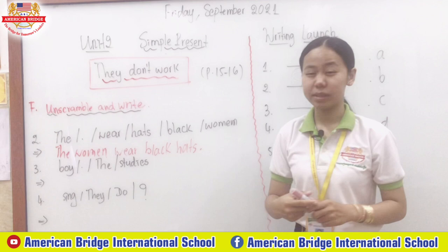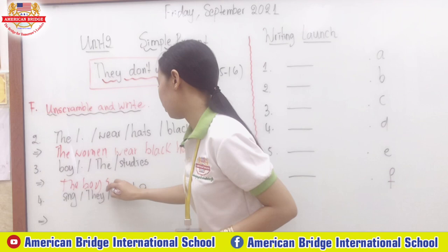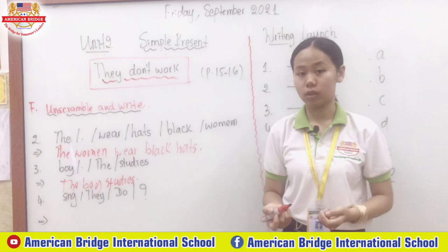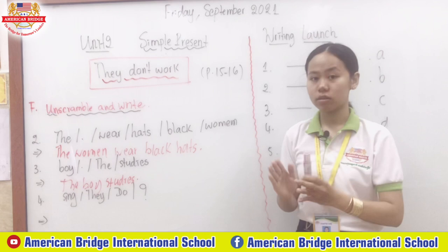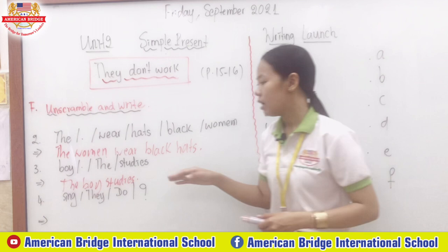How about number three? We have: boy, full stop, the, and study. We start with 'the boys,' which is the subject. The boy is the third person singular, representing 'he,' so we need to change the verb. We drop the 'y' and add 'ies' because 'study' follows the rule: consonant plus y — drop y and add ies. So we have: The boy studies.